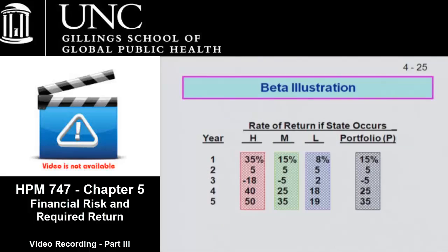We've got an example here. We've got two HML — high, medium, low risk investments — and we're forecasting the rates of return over the next five years. The portfolio P could be either the Standard & Poor's 500, which is what we're predicting for the stock market over the next five years, or if you're in a not-for-profit, that portfolio P could be what you expect the rate of return on the organization to be — the total market return on the organization as a whole.